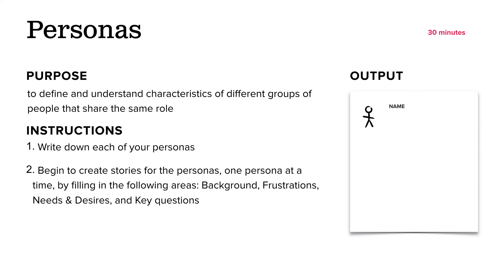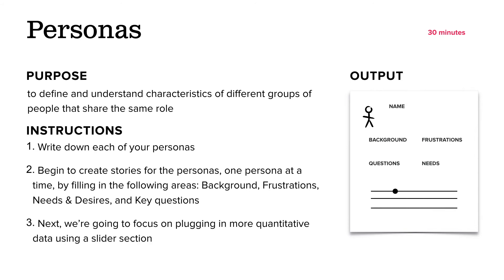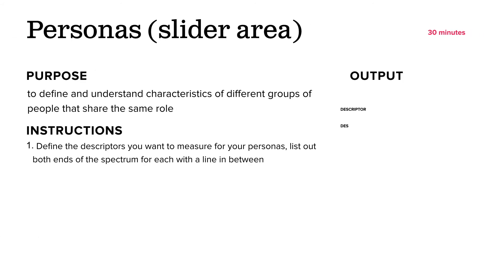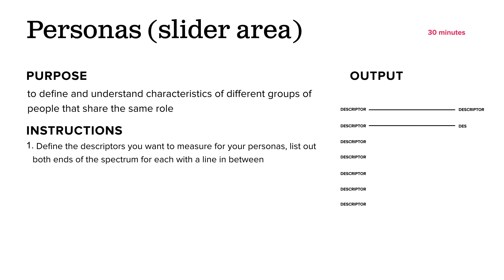So how do you do it? On a page, you've got their name, background, frustrations, questions, and needs — and then you have an area called the slider area. The slider area covers quasi-quantitative dimensions like how technical they are, their level of domain expertise, and how frequently they log into your product.